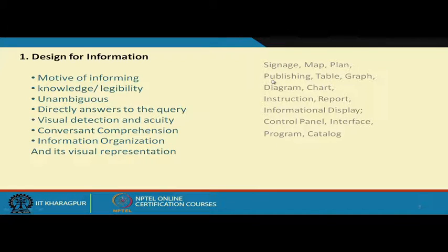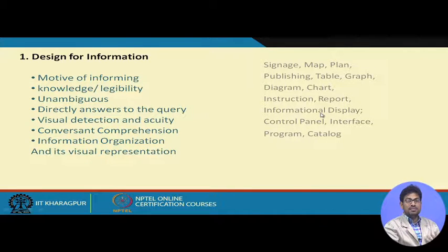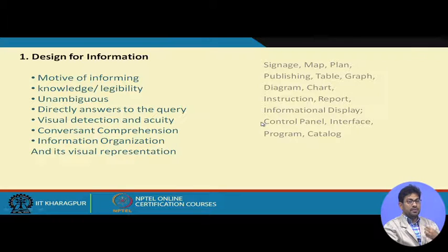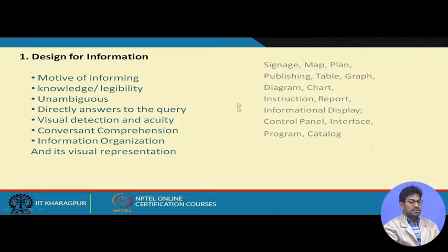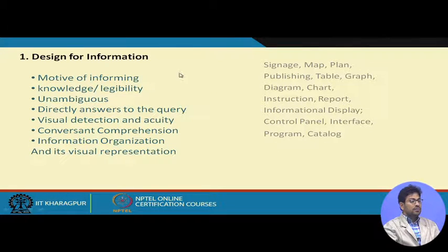There are many examples of design for information: signages, maps, plans, publishing material, tables, graphs, diagrams, charts, instruction manuals, reports, informational displays, LED displays, control panels, interfaces — like those on mobile phones and gadgets — programs, and catalogs. All of these are artifacts which are used in design for information.